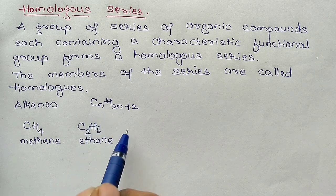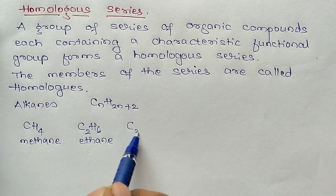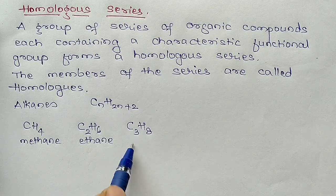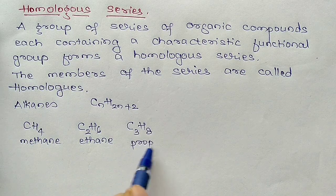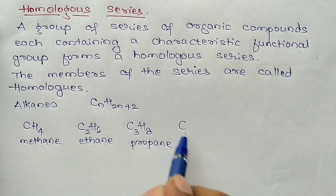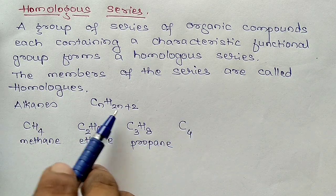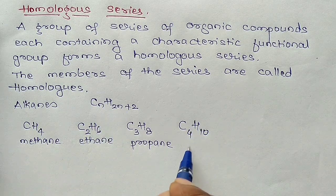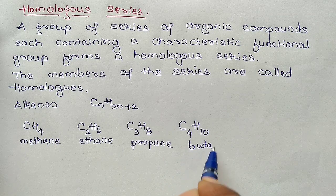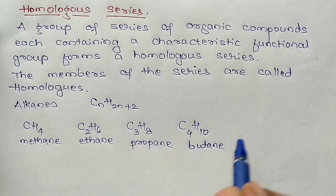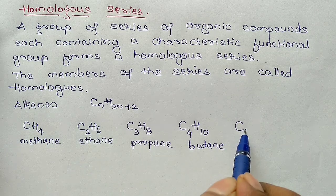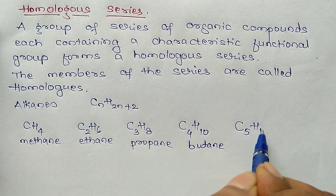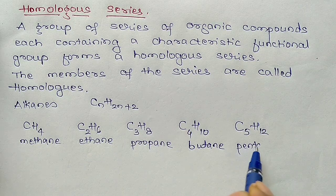Substituting n=3 gives C3H8, which is propane. Substituting n=4 gives C4H10, which is butane. Substituting n=5 gives C5H12, which is pentane, and so on. These are the members of the alkane homologous series, each differing by a CH2 group from the previous member.